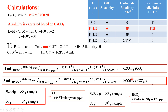We want to express this as concentration in ppm. We have 0.004 grams of carbonate in 50 grams of water — how many grams are there in 1 million grams of water? This gives 80 ppm of carbonate alkalinity (p-alkalinity) with no hydroxide alkalinity. For bicarbonate, 0.006 grams in 50 grams of water yields 120 ppm — this is the m-alkalinity or bicarbonate alkalinity.